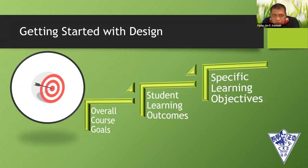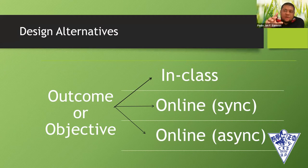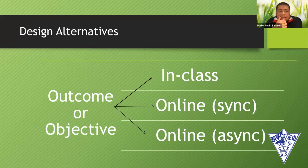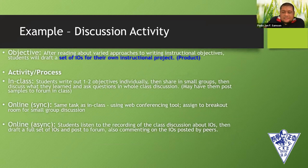To design HyFlex learning, first identify your overall course goals, student learning outcomes, and specific learning objectives. After designing those, design alternatives for all of them — taking into consideration outcomes for in-class, face-to-face students; for online synchronous students attending the class live online; and for asynchronous students who cannot attend the specific scheduled class time. Then continually redesign the content, assessment, and engagement for each of those three modes.